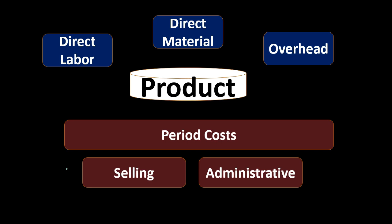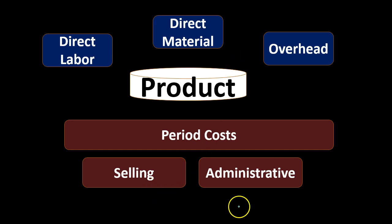Utilities on the executive office, unlike utilities on the factory which go into overhead, would be expensed as you would typically expect. If it's depreciation on the executive office, we would record depreciation expense. But if it was on the factory, we would include it in inventory. Selling and administrative expenses act more like we would think if we're used to dealing with companies that don't deal with making inventory — service companies or companies that buy and sell inventory.